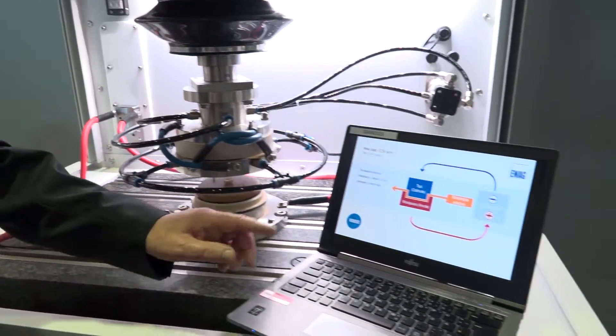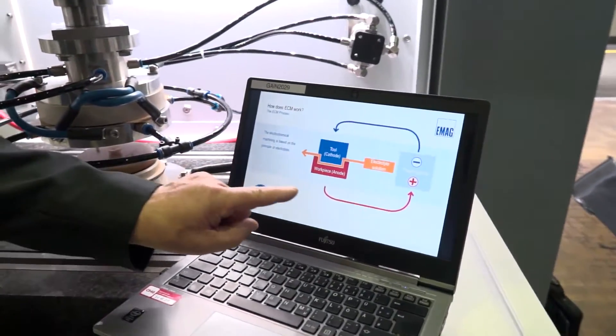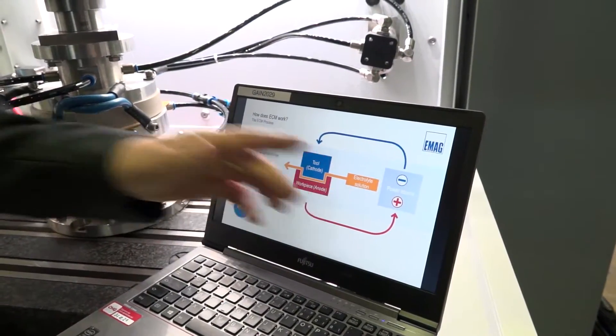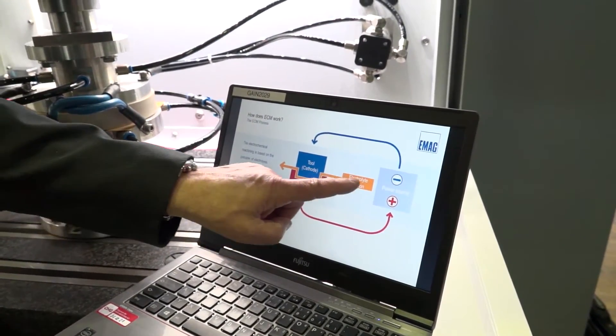And here you see a screen where we explain the process. We have a power source, in this case 2500 amps, we have the cathode which is in the blue color.